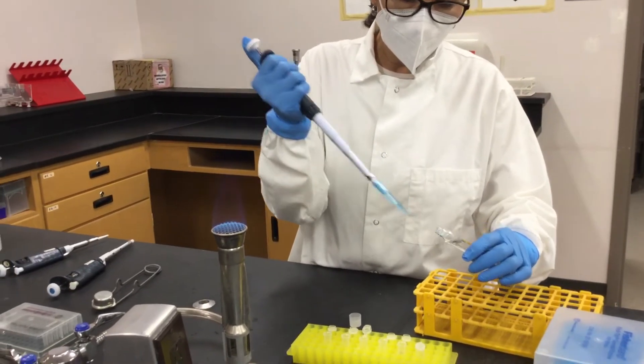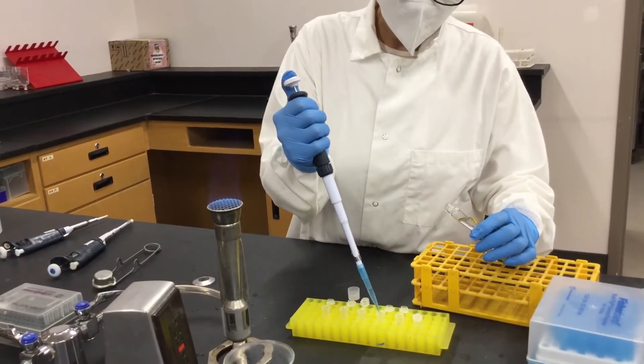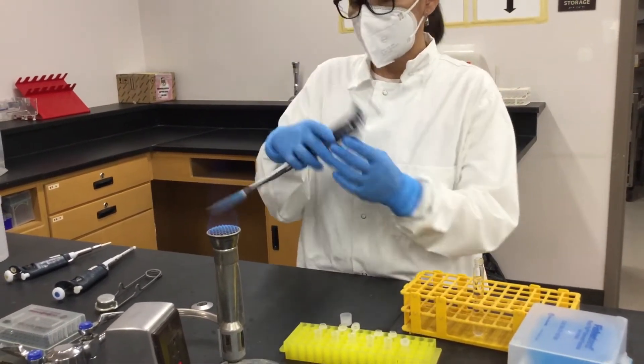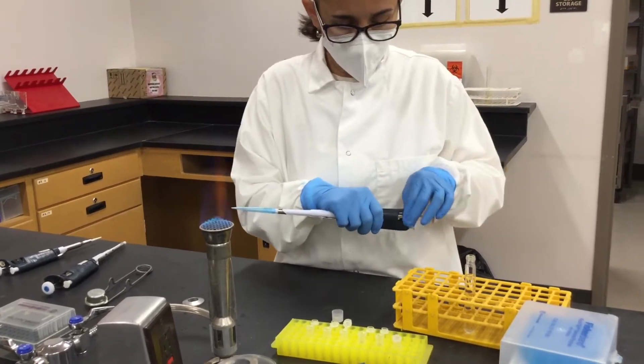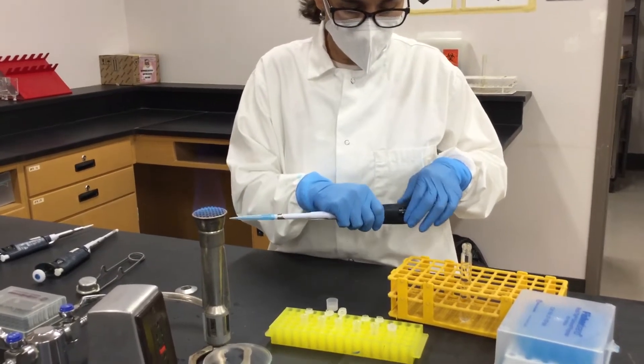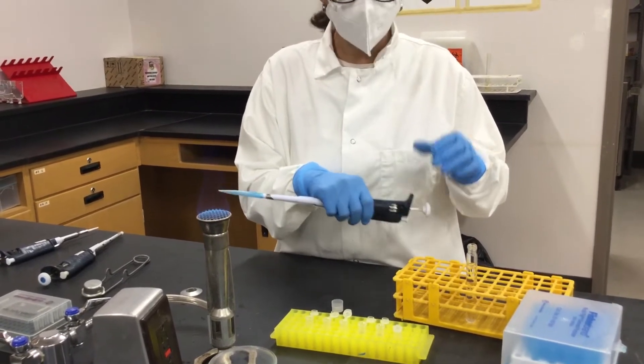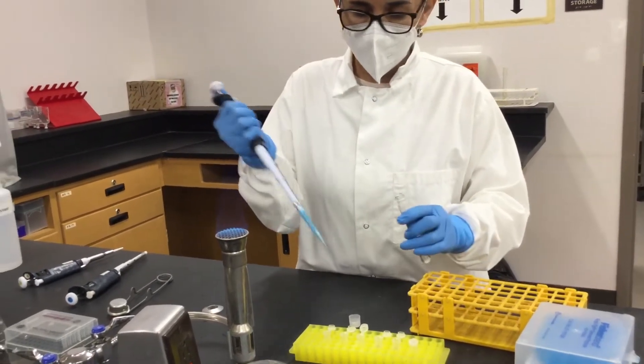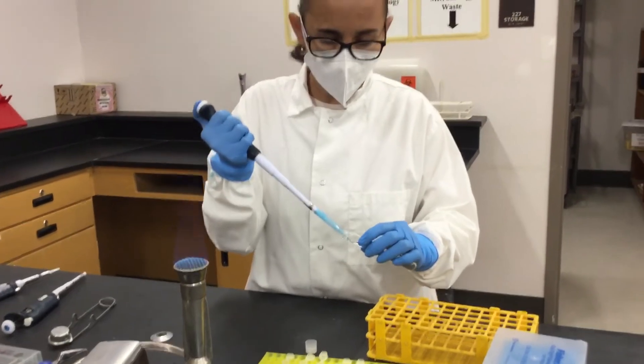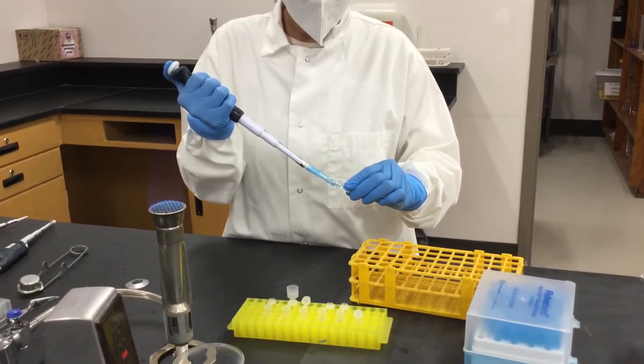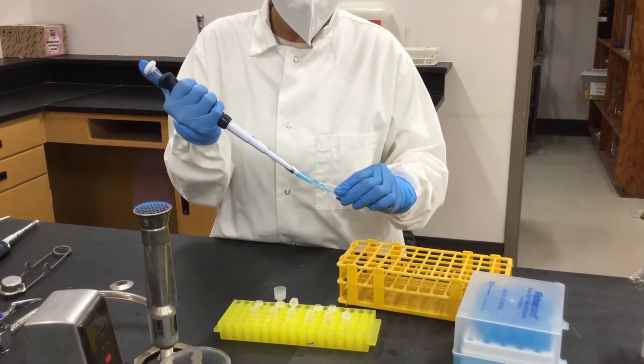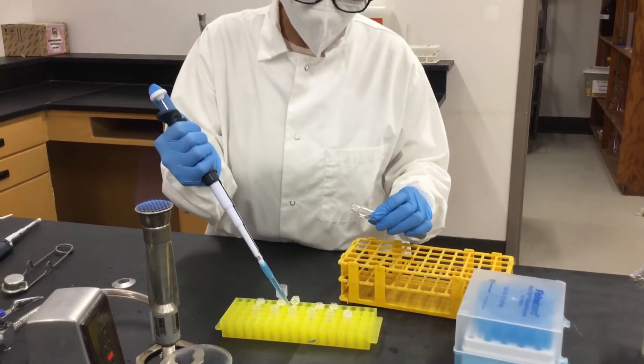And then for the next we're going to use 900 microliters. So I will set this to 900 microliters, which is 0-9-0, and then add to these three each of them 900 microliters of water.